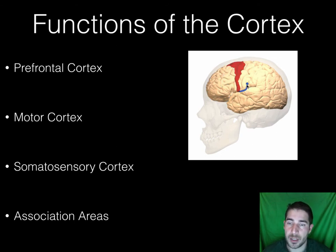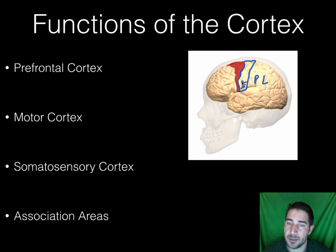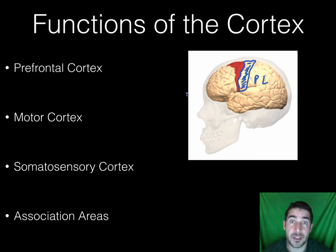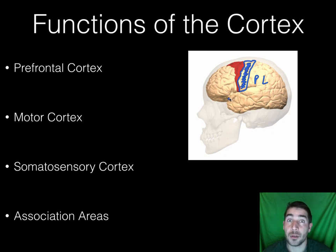Right behind the motor cortex is the somatosensory cortex, which is in the parietal lobe. The somatosensory cortex is involved in sensing and perceiving the world around you. So when you touch something, hear something, or feel something, that's activating your sensory cortex. So to summarize: motor cortex is in the frontal lobe, sensory cortex is in the parietal lobe.